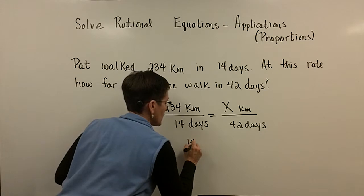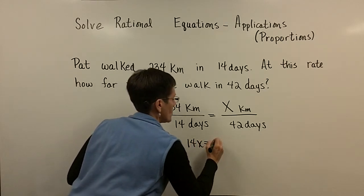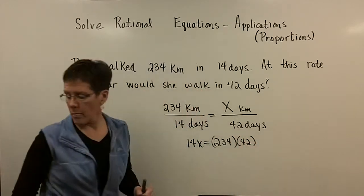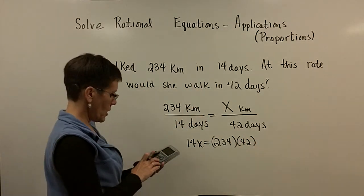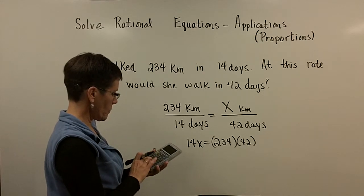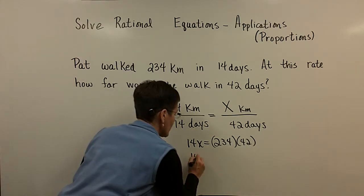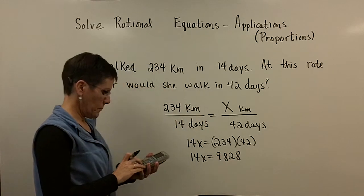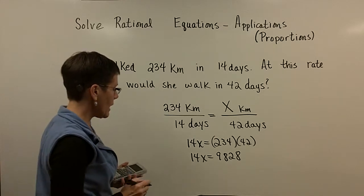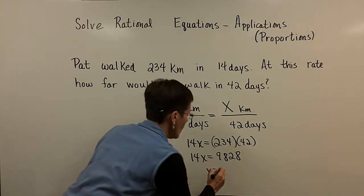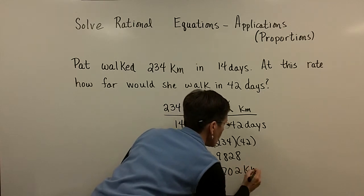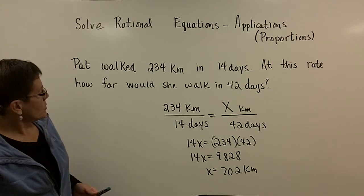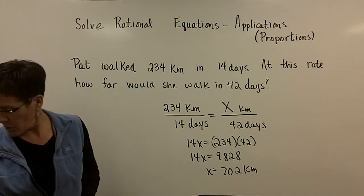And now I can set the cross products equal to one another. So right here, I have 14 times x equals 234 times 42. I'm going to grab my calculator. So the 234 times 42 is 9828. And when I divide that by 14, I get that Pat can walk 702 kilometers in those 42 days.